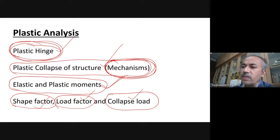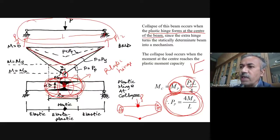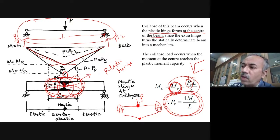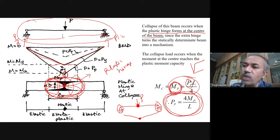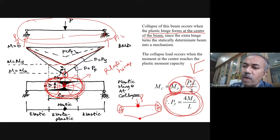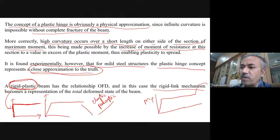Once a plastic hinge forms, it is mechanism itself, and we calculate elastic-plastic moments and all those details. The simply supported beam is a very straightforward problem. As you keep on increasing the load, the plastic hinge forms, but in reality it will spread. In our analysis, we ignore the length of the hinge — we assume it occurs only at that point.